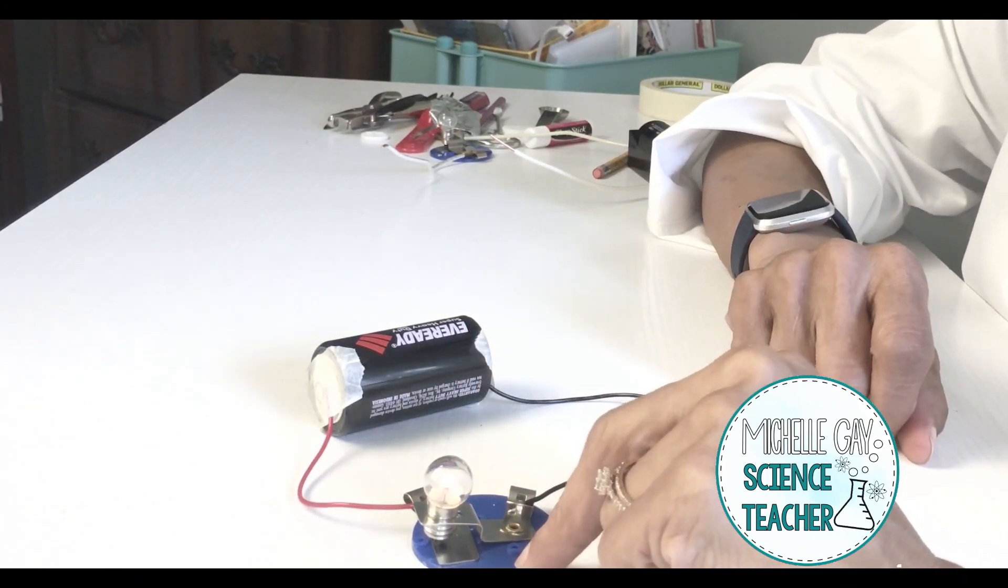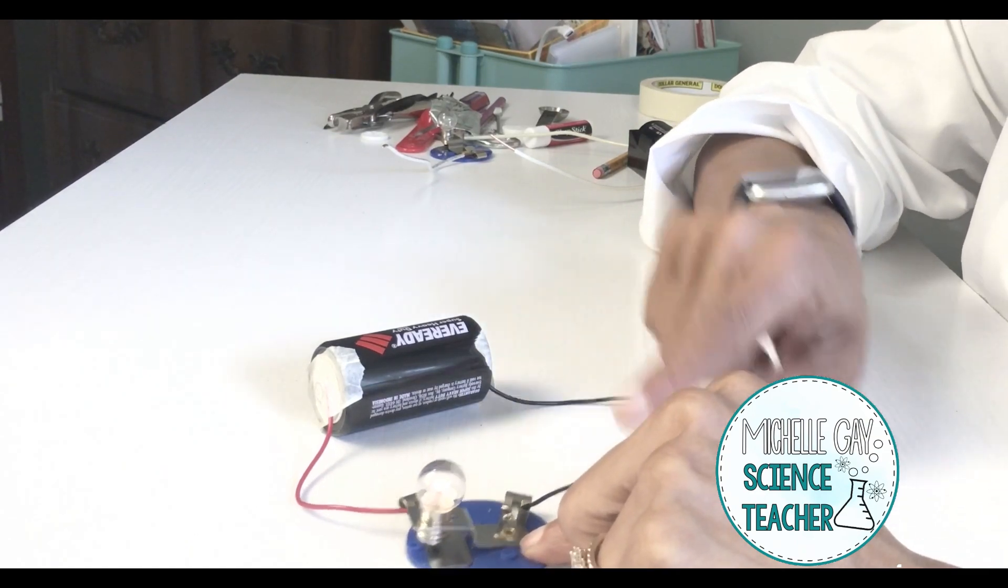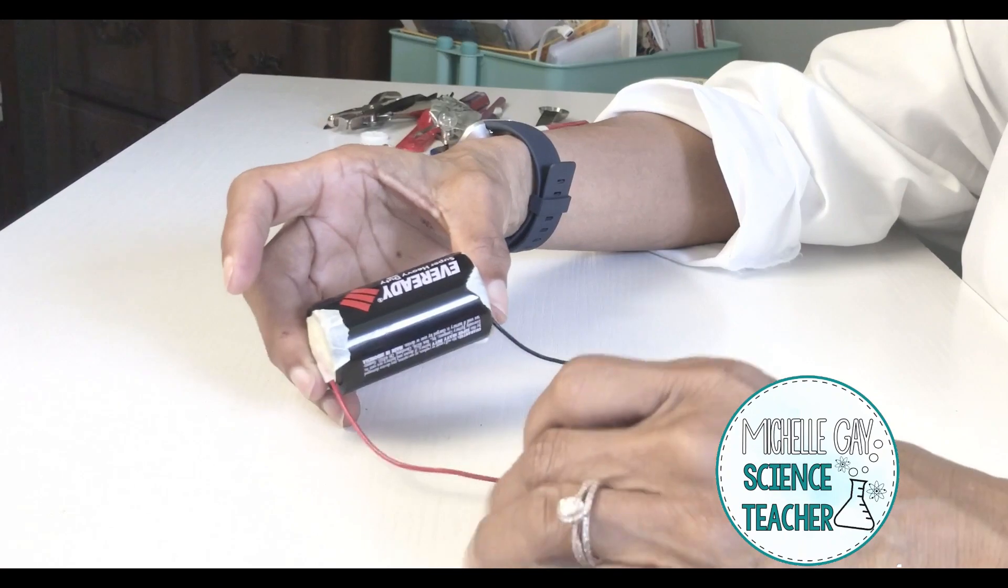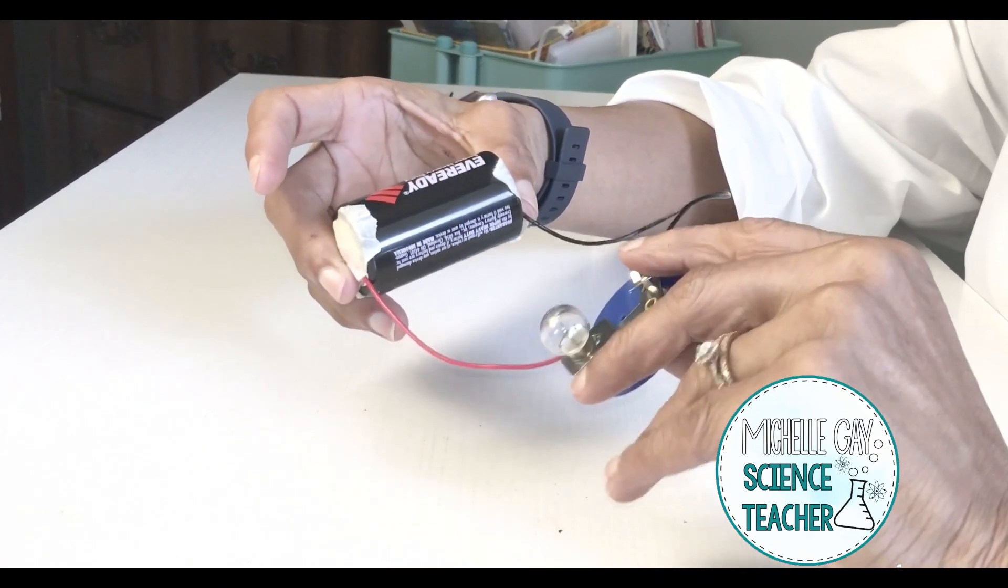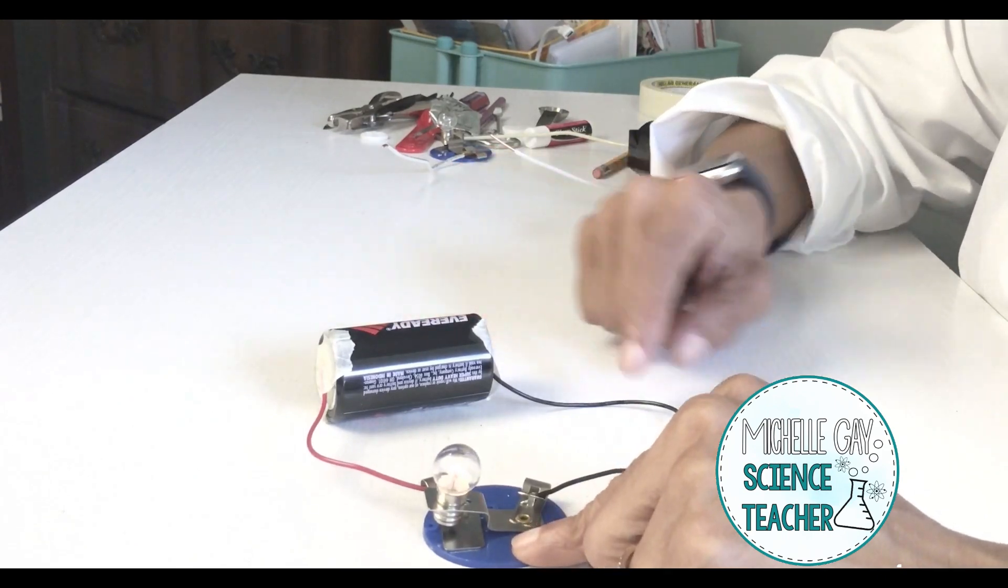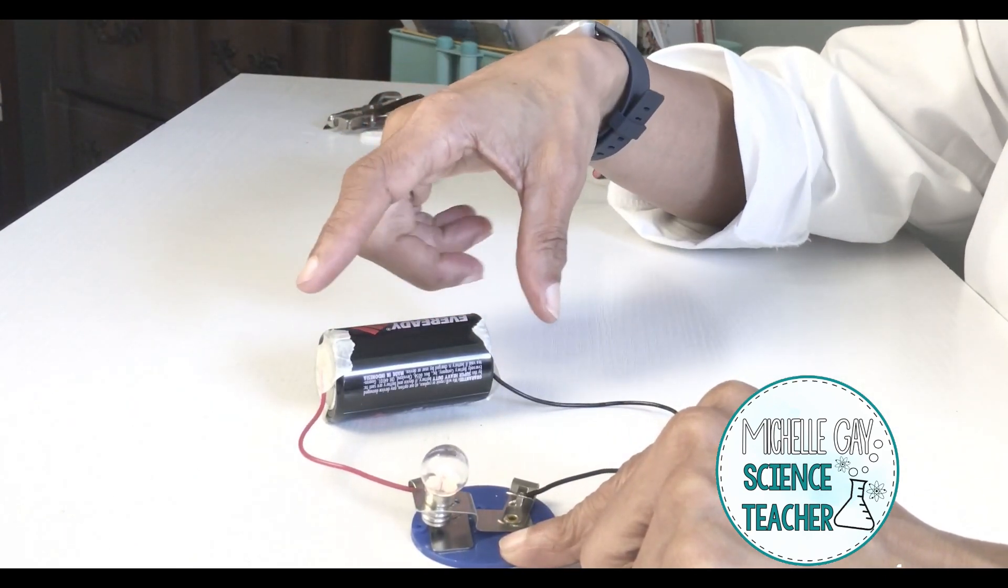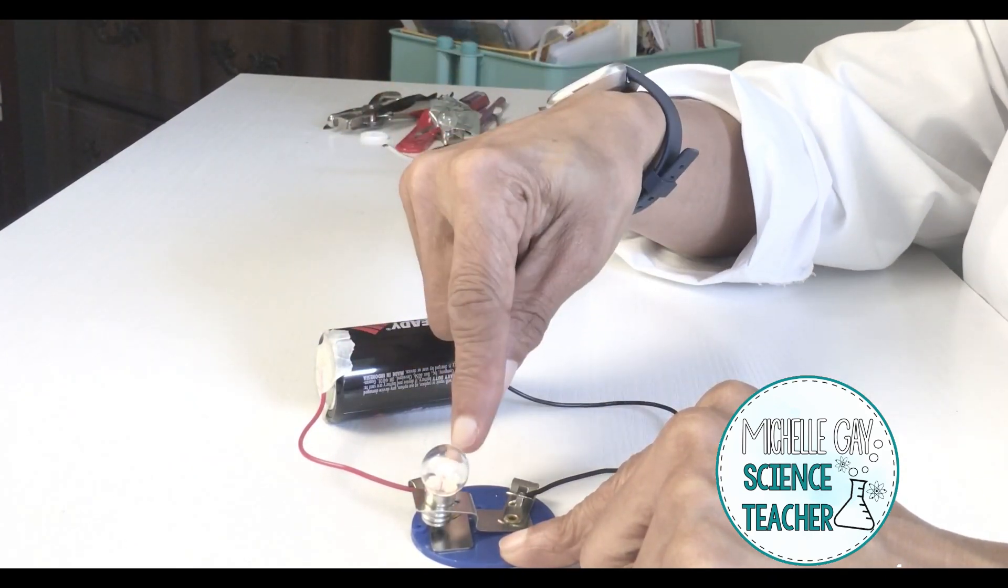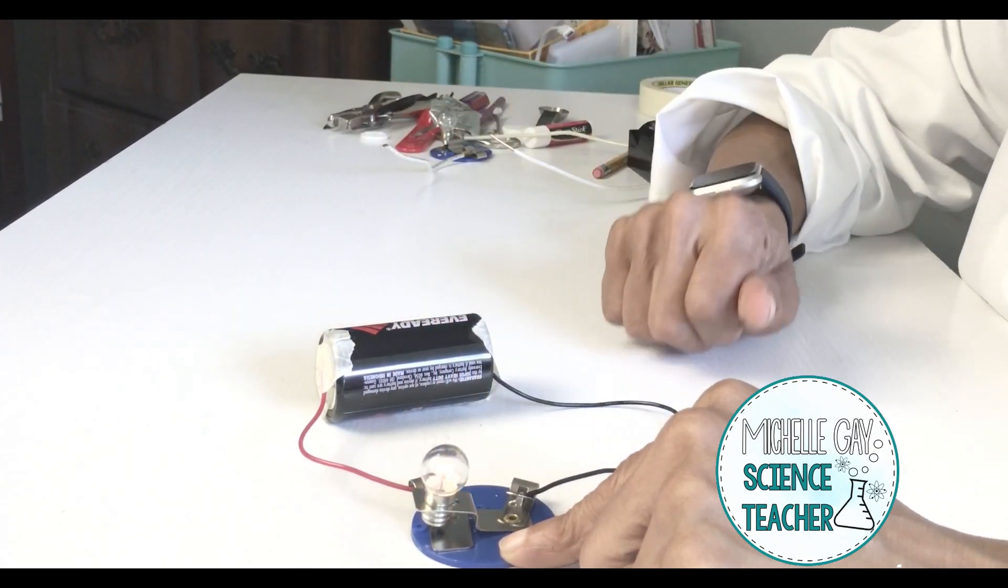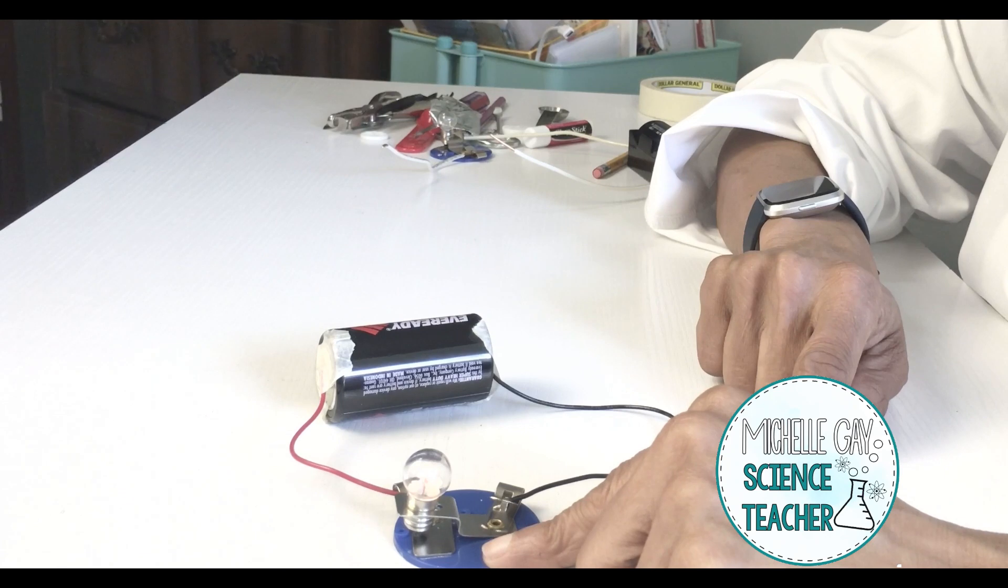Let's place the other wire and see what occurs. The bulb comes on. So now we have a complete circuit. Everything is touching. So the wires to the batteries, the wires to the clip, and then the bulb is touching the metal. So that's our complete circuit.